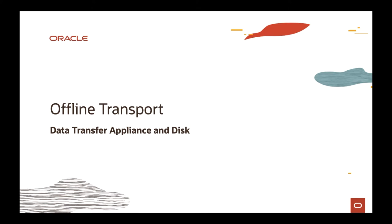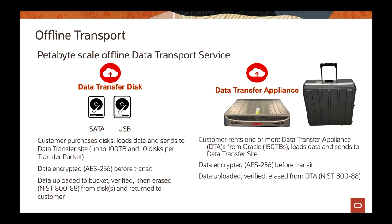On this second portion, we're going to talk about offline transport. We're going to cover data transfer appliance and data transfer disk. If you're planning to move a huge amount of data from your on-premises to OCI, you can use data transfer disk — a service where you ship a hard drive (SATA or USB) to Oracle, and we copy that data to a dedicated object storage bucket that you specify. Then you can copy it to your block storage or local machine inside OCI.